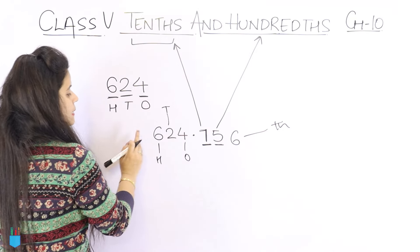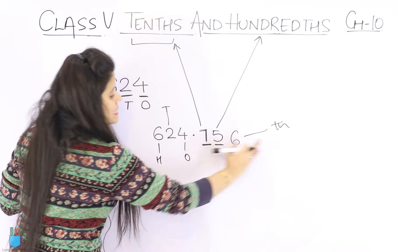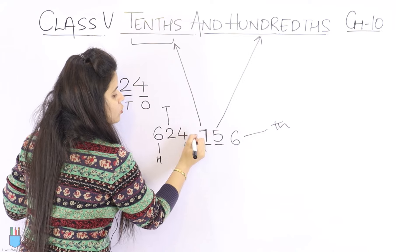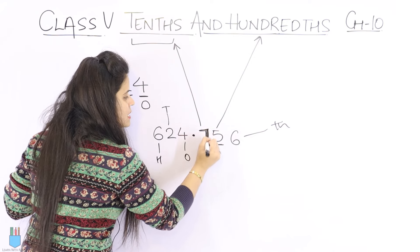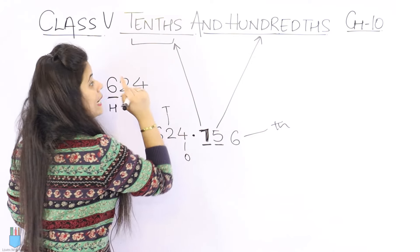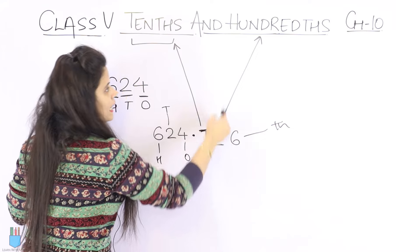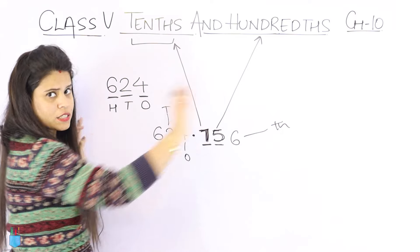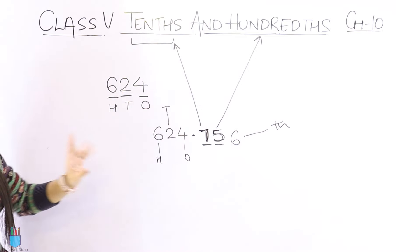So: ones, tens, hundreds, thousands, and so on going left. And if you go to the right side of the decimal, the first digit is the tenths place, and the next digit is the hundredths place, and so on.